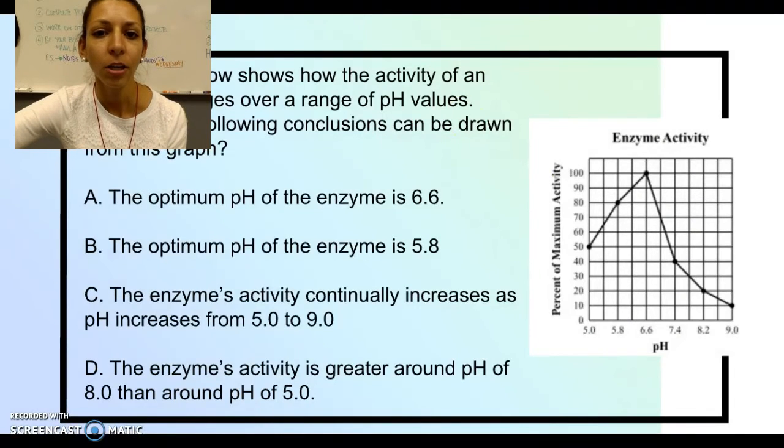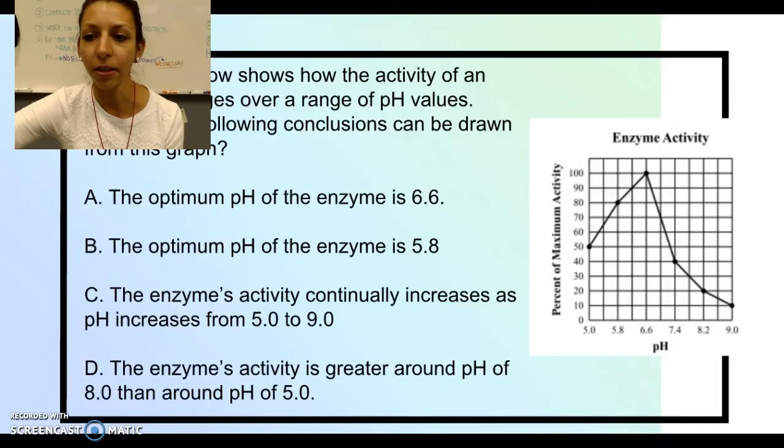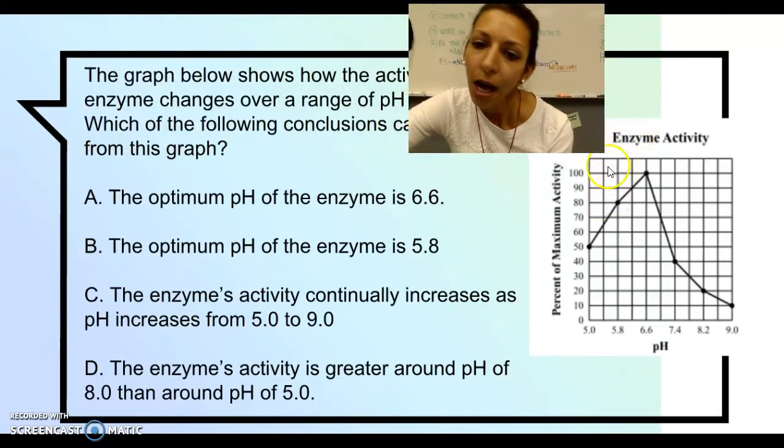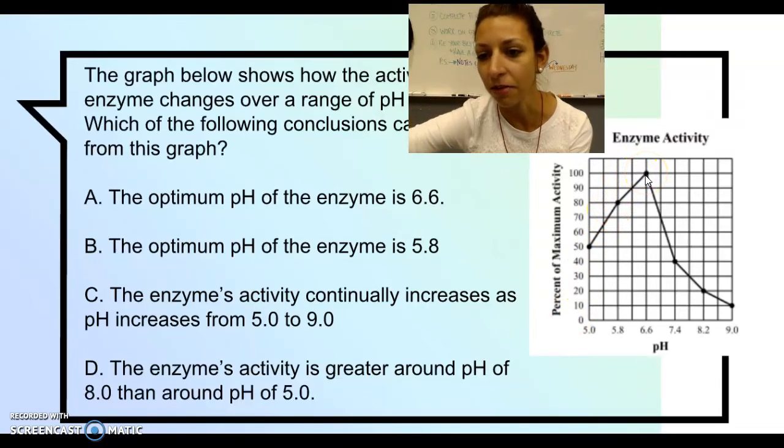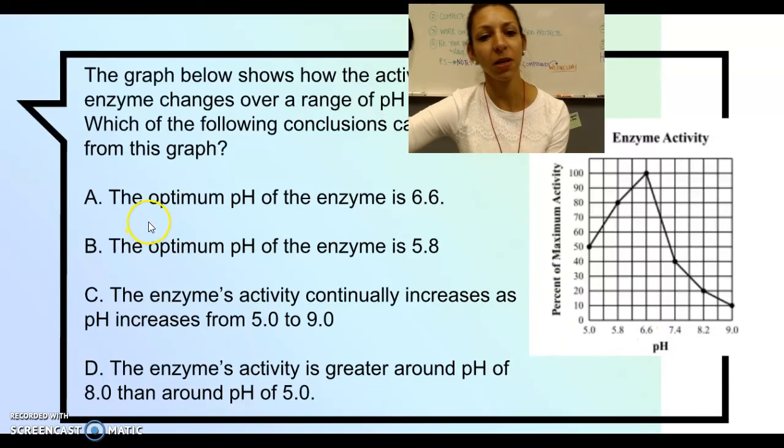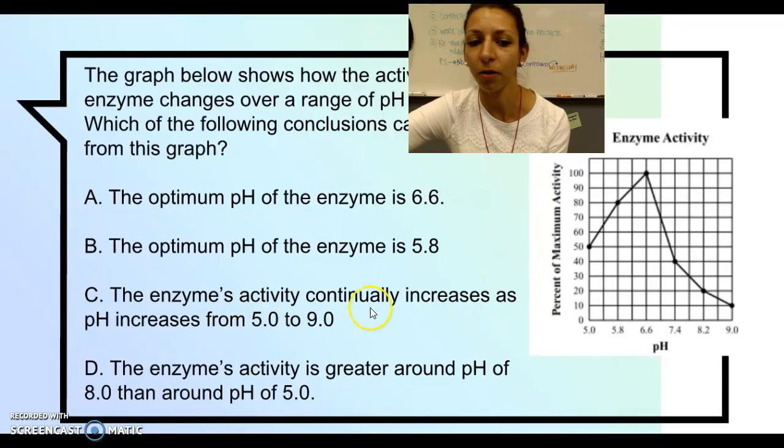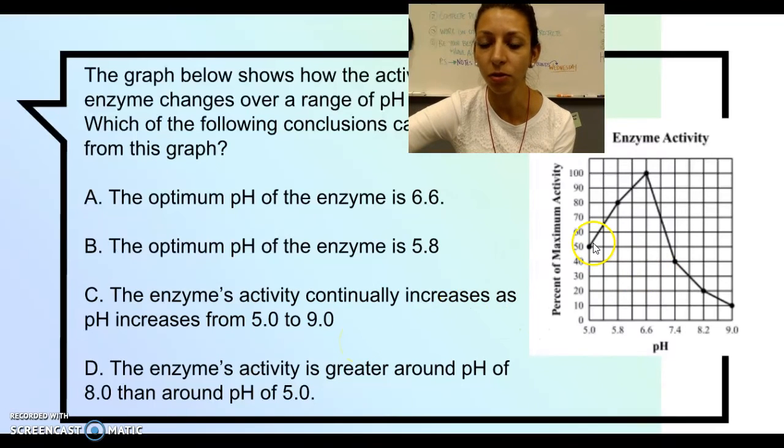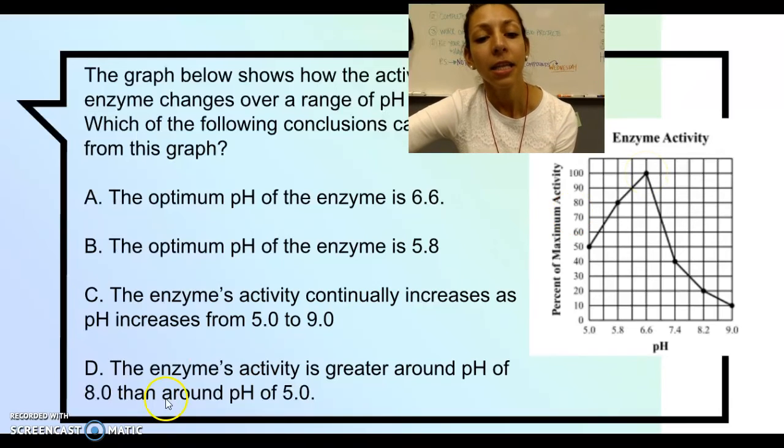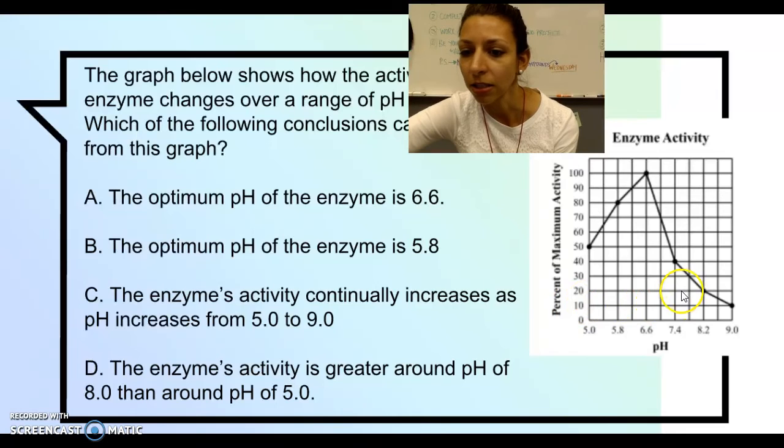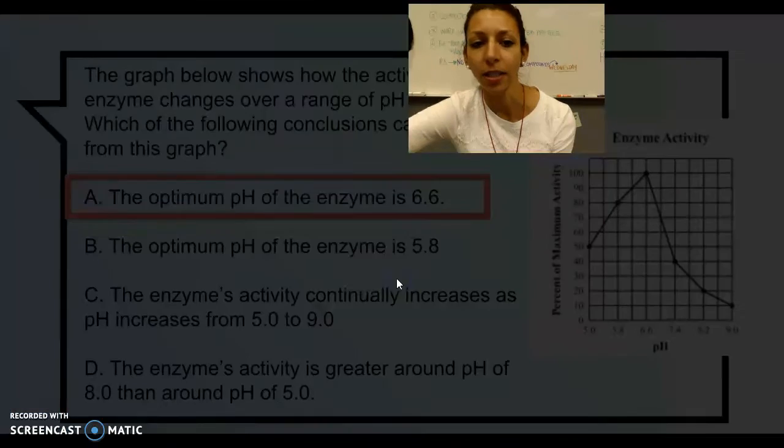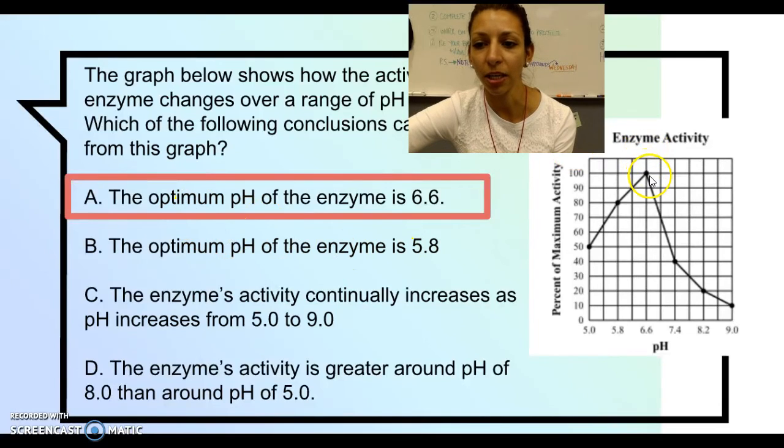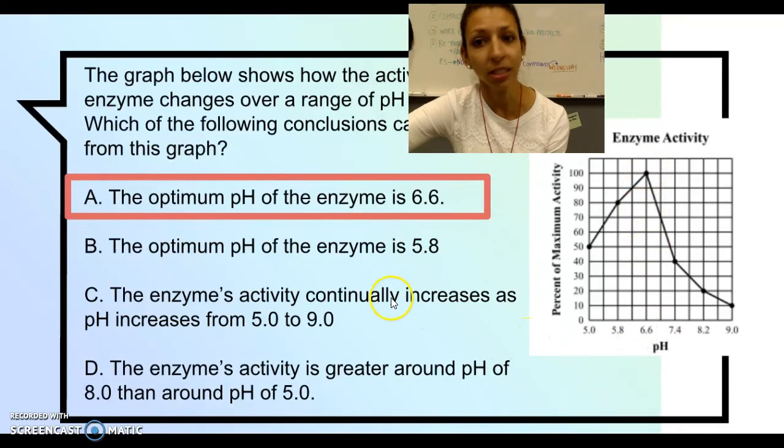The graph below shows the activity of an enzyme changes over a range of pH values. Which of the following conclusions can be drawn from this graph? So we look up here, we have enzyme activity. We have the percent of maximum activity. We've got 100%. We've got maximum activity right at this pH of 6.6. So let's look at our answers. The optimum pH of the enzyme is 6.6. The optimum pH of the enzyme is 5.8. The enzyme's activity continually increases pH from 5.0 to 9.0. That's not true, because the activity starts to go down after it hits its optimum at 6.6. The enzyme's activity is greater around pH of 8 than around pH of 5. Nope, that is incorrect. Our best answer is optimum pH. So even if you didn't know what optimum was, you could pretty much guess that the highest point on this graph matches up with pH 6.6. And that is where the enzyme does its job best.